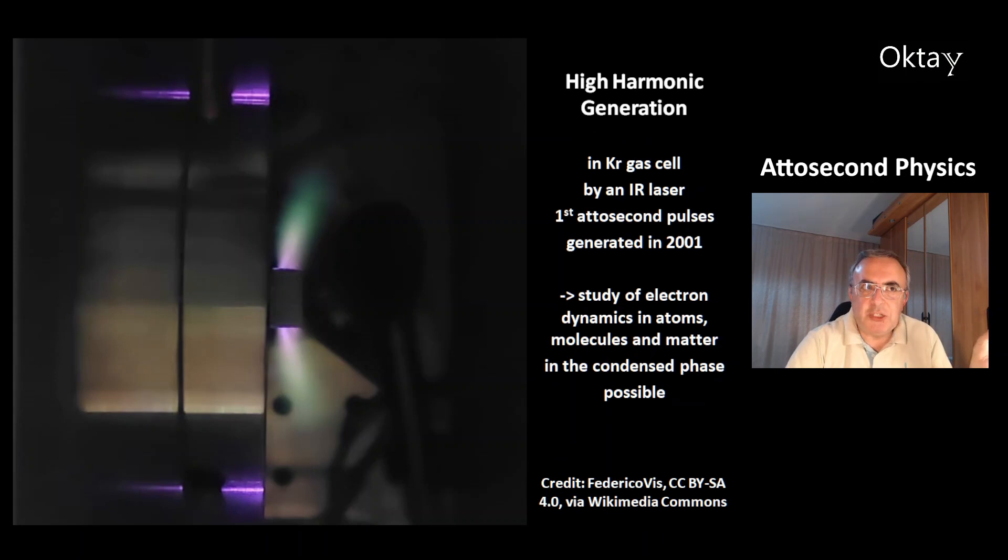This is a picture of the high harmonic generation of krypton gas in a krypton gas cell by an infrared laser. The first attosecond pulse was generated in 2001. The attosecond pulses can be used for the study of electrons, electron dynamics in atoms, molecules and matter in condensed phase.